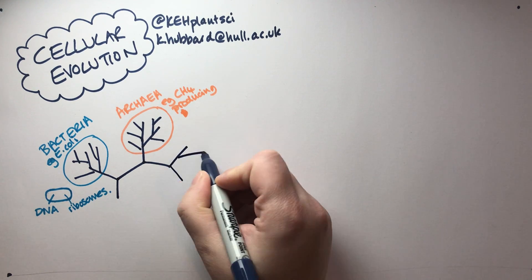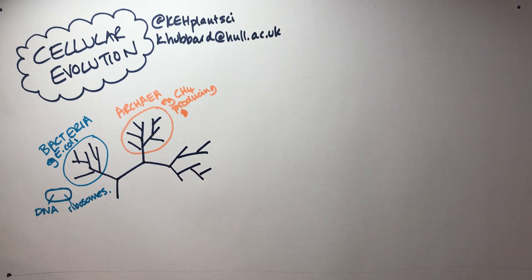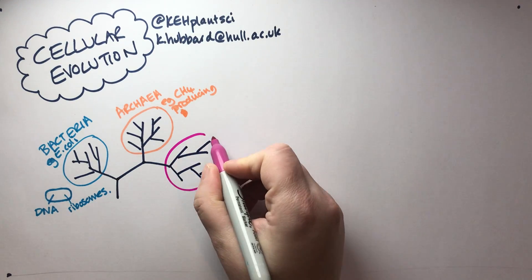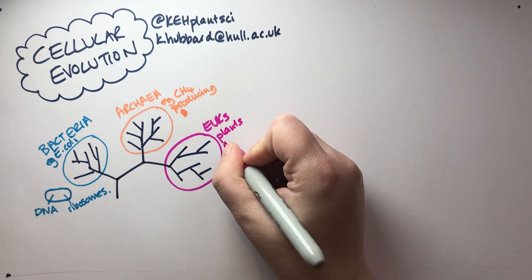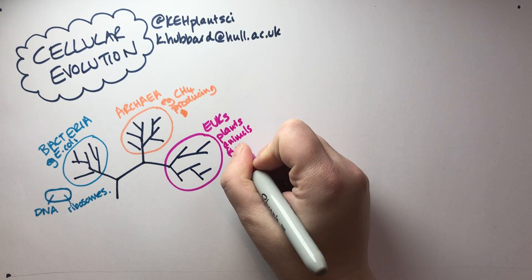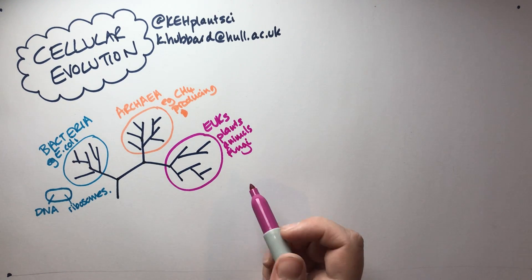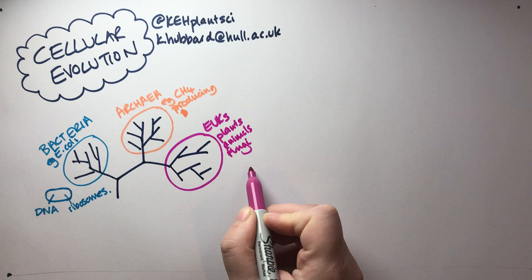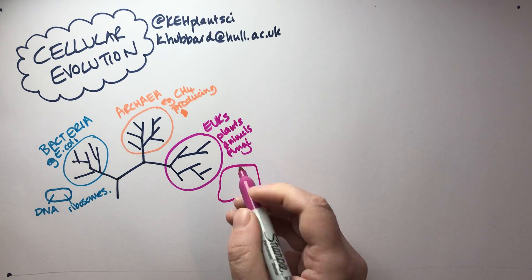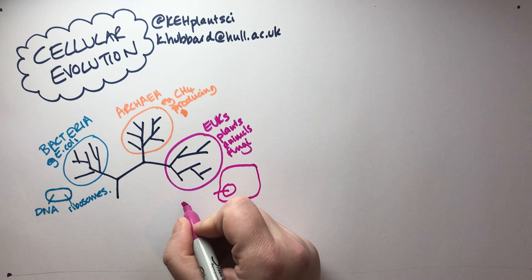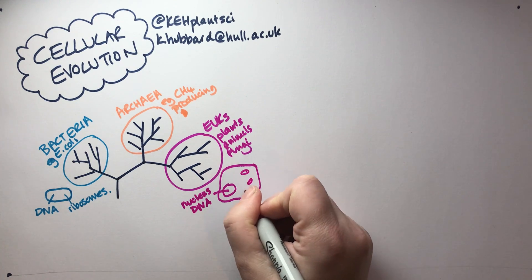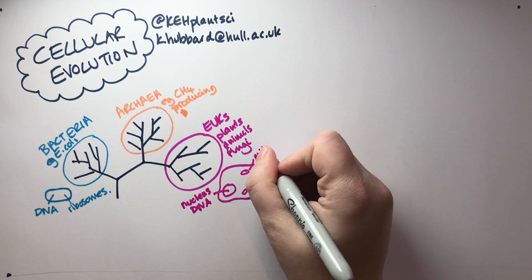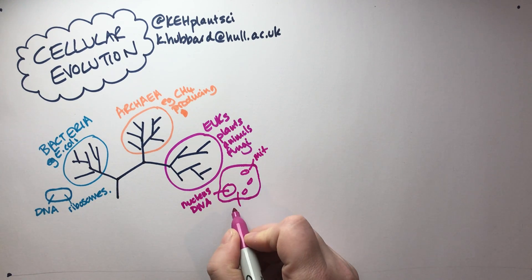Then we've got our last major branch — the eukaryotes. That's the plants, the animals, and the fungi. We know that eukaryotes have a much more complicated cell structure: they're larger cells in general, they've got a nucleus which contains the DNA genome, they've got internal organelles such as the mitochondria and the Golgi apparatus, and they've got ribosomes.